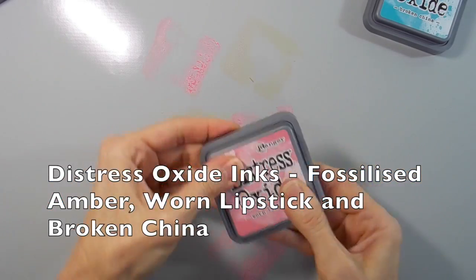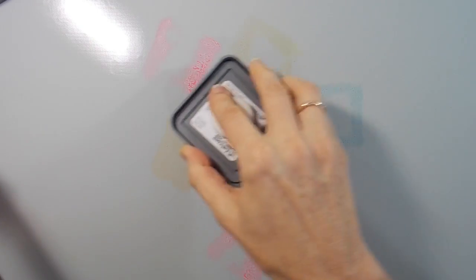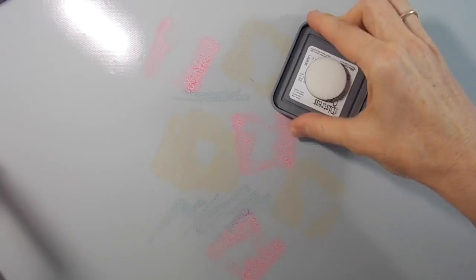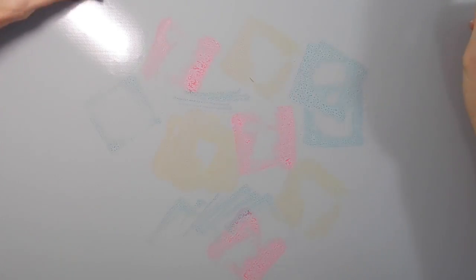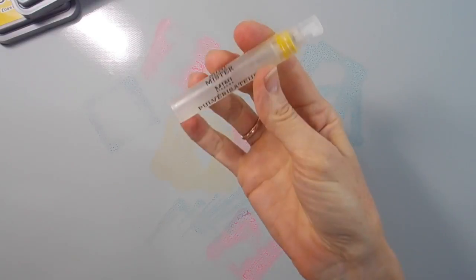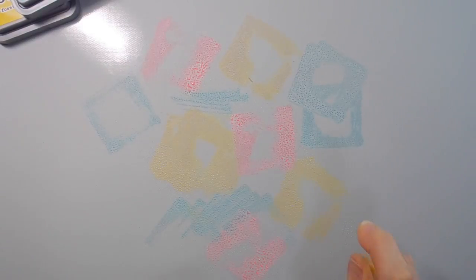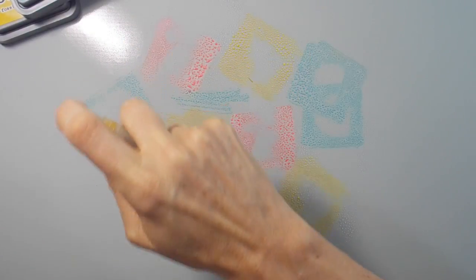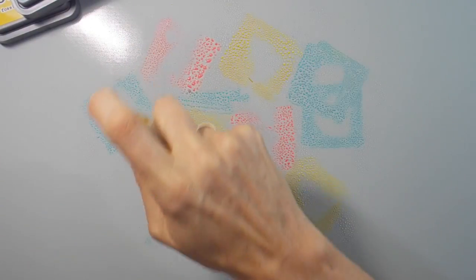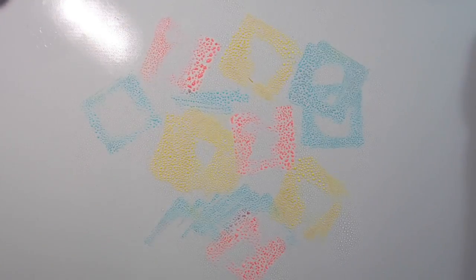Now the fun begins. Oh I love this bit. I've got my three chosen colors of Distress Oxide—the Worn Lipstick, Fossilized Amber, and Broken China. I've smooshed them down on my craft mat and now I am spraying all the colors until they bead up nicely, getting a good coverage of water all over them.